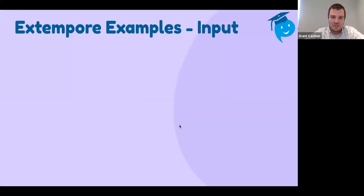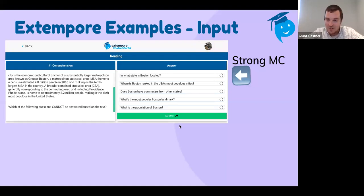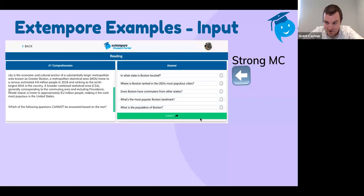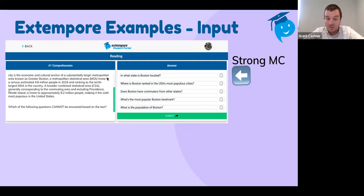Let's see some examples on Extemporary. If you're unfamiliar, here are some examples of what you can do. It's an all-in-one assessment platform: speaking, reading, listening, writing — interpretive, presentational, and interpersonal — all three modes, all four skills, however you want to assess or practice. This is what I mean by strong multiple choice questions. You have a reading in the target language — I pulled a text from Wikipedia about Boston when ACTFL was there. The question is: 'Which question cannot be answered based on the text?' So in order to answer, the student has to process five questions. That's a high-quality interpretive assessment.